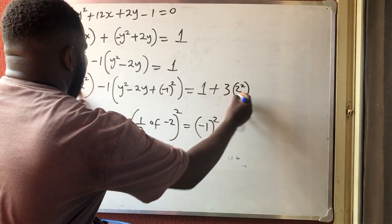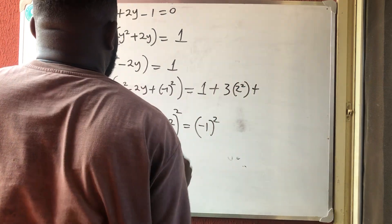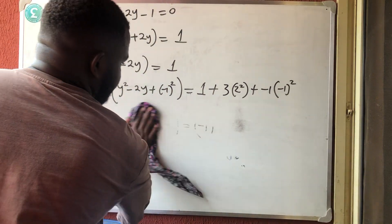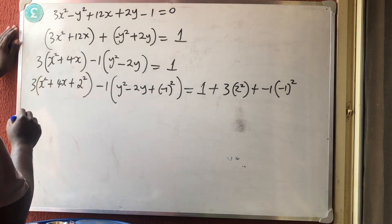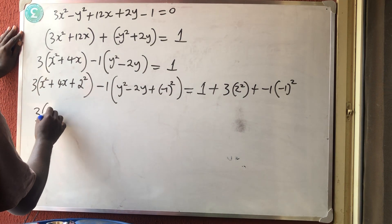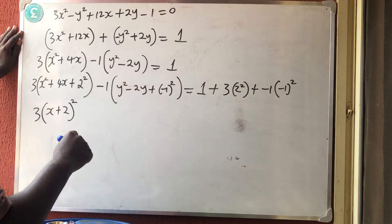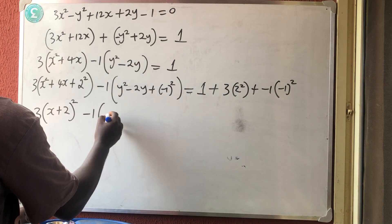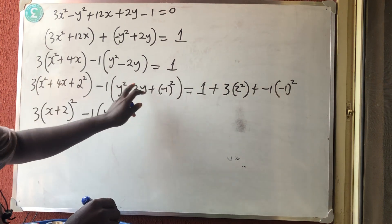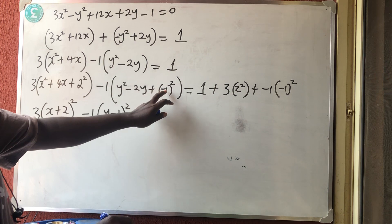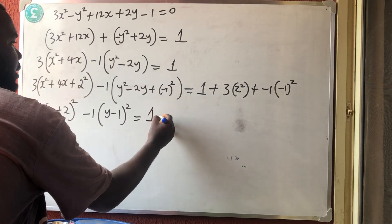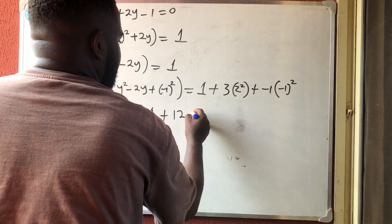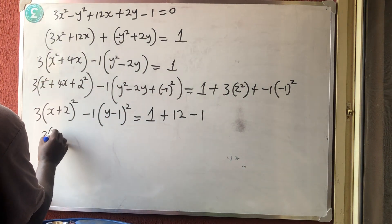Adding 4 inside the x-bracket multiplied by 3 adds 3(4) = 12 to the right. Adding 1 inside the y-bracket multiplied by −1 adds −1(1) = −1 to the right. So the right side becomes 1 + 12 − 1 = 12. We now have 3(x + 2)² − 1(y − 1)² = 12.